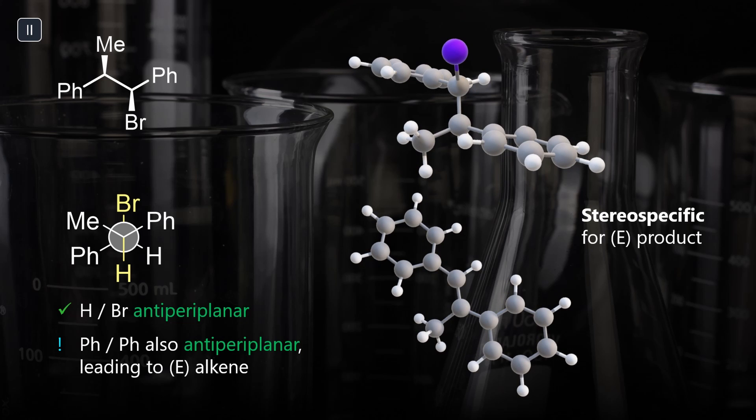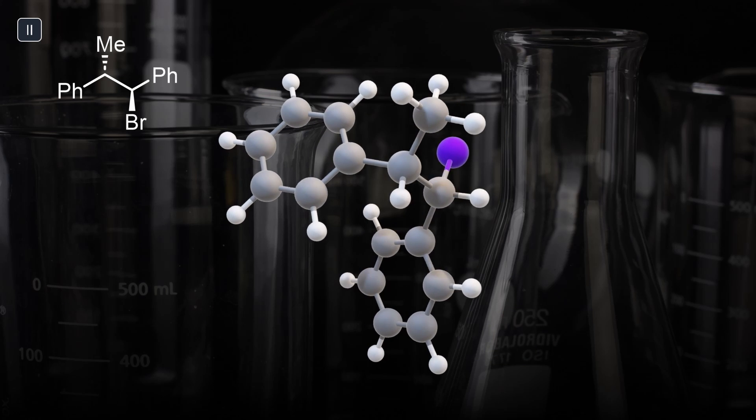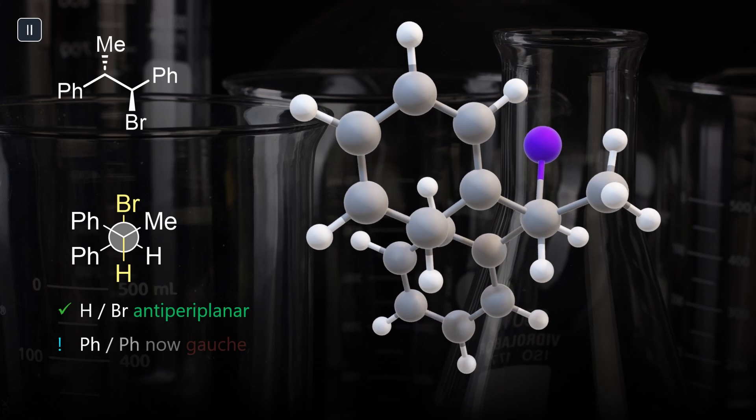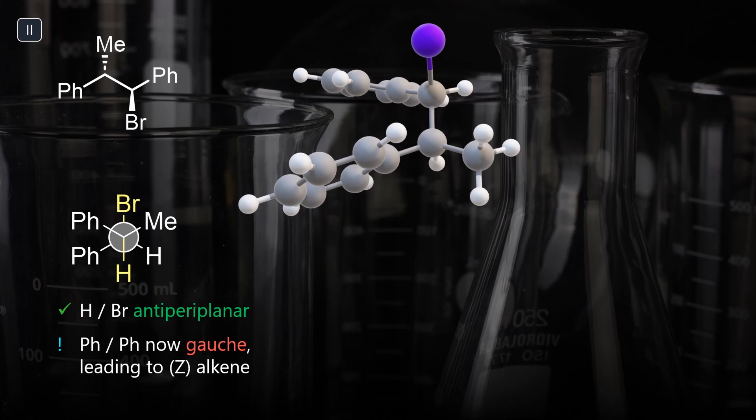What about the second one? In the only possible anti-conformation, the phenyl groups are gauche to each other and coding for a Z-product. The visual shows us that they are really big, so never be fooled by abbreviations and try to think in 3D.